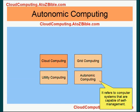Autonomic computing refers to a computer system that is capable of managing itself — in other words, it is capable of self-management.